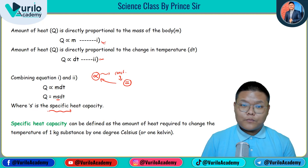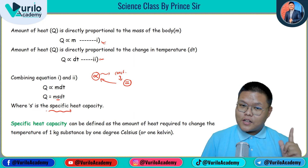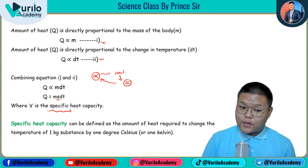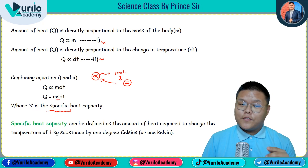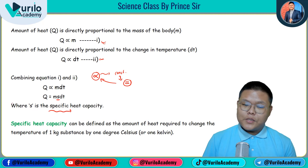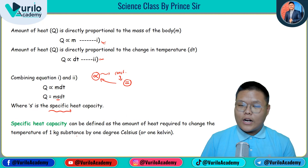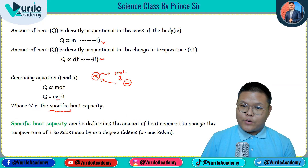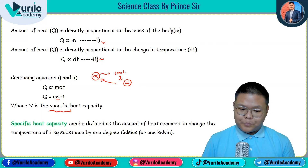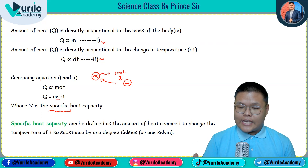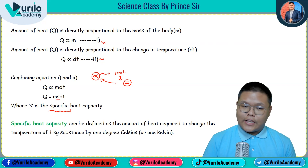Once we place a constant value, we can replace the proportionality sign with an equals sign. This constant S is called specific heat capacity. This constant is not the same for all substances — unlike the universal gravitational constant, the specific heat capacity of any substance is not the same as another substance. So specific heat capacity is defined as: it is the amount of heat required to change the temperature of one kg of substance by one degree Celsius.